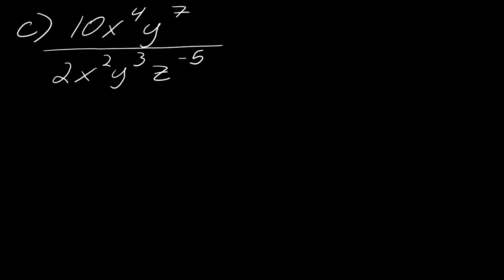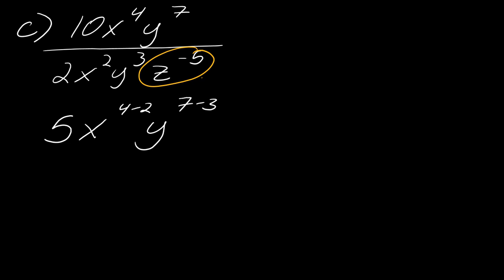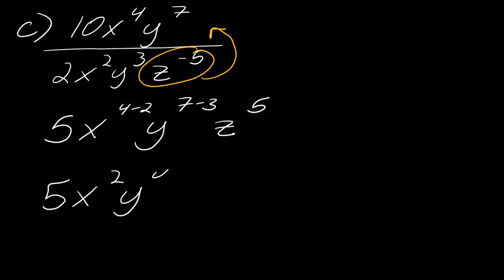This next problem applies the quotient rule while also working with negative exponents. Dividing 10 by 2 gives 5. For the exponents: x to the 4th minus 2, y to the 7th minus 3, and z to the negative 5th — since there are no other z's, bring it up to the numerator to eliminate the negative exponent, making it z to the 5th. The final answer is 5x squared y to the 4th z to the 5th.